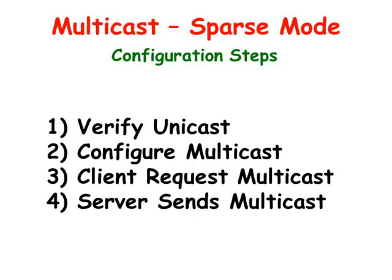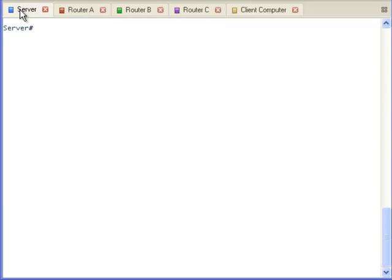These are the steps we're going to use to configure multicast. First, we are going to verify that the unicast network works correctly. Second, we are going to configure the routers for multicasting. Third, we're going to have a client request multicast traffic. Fourth, we're going to have the multicast server send out multicast traffic. The very first step is to verify that the unicast connectivity is working correctly. We're going to ping the client computer using the multicast server.